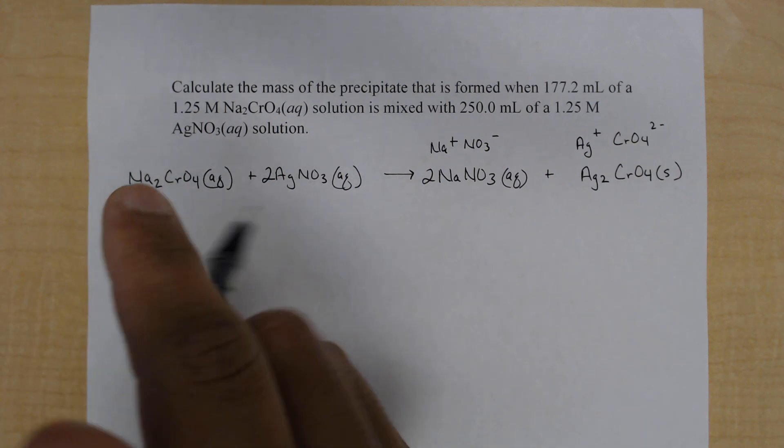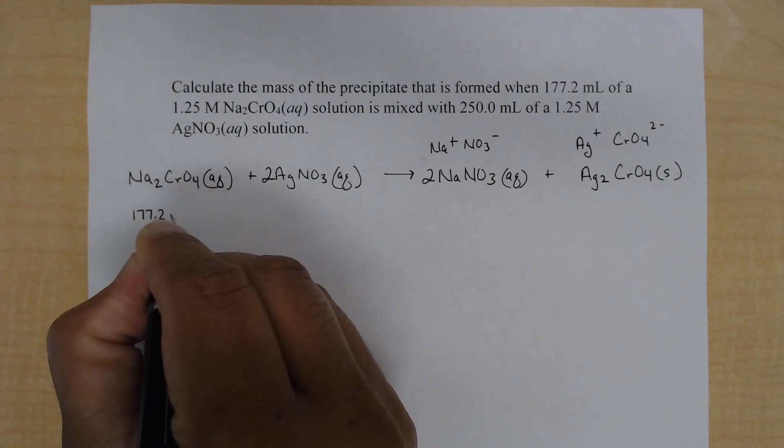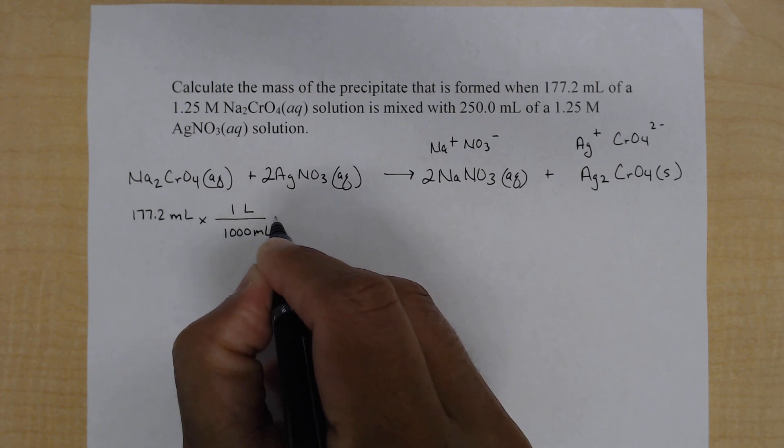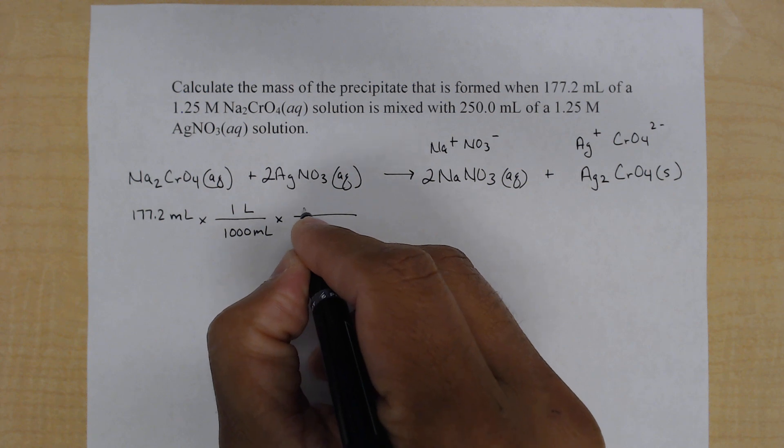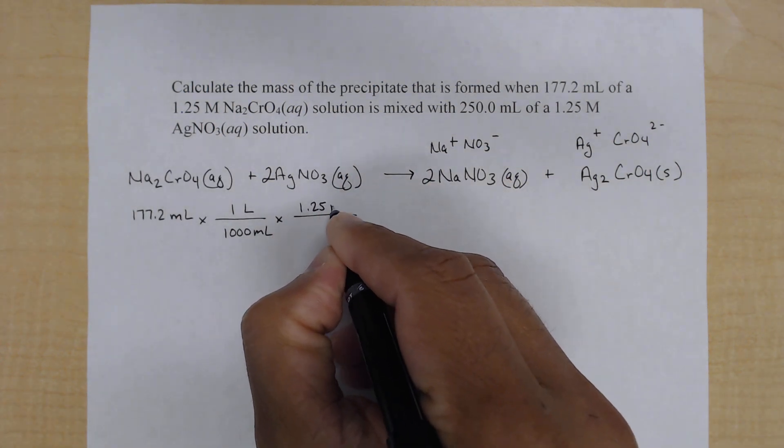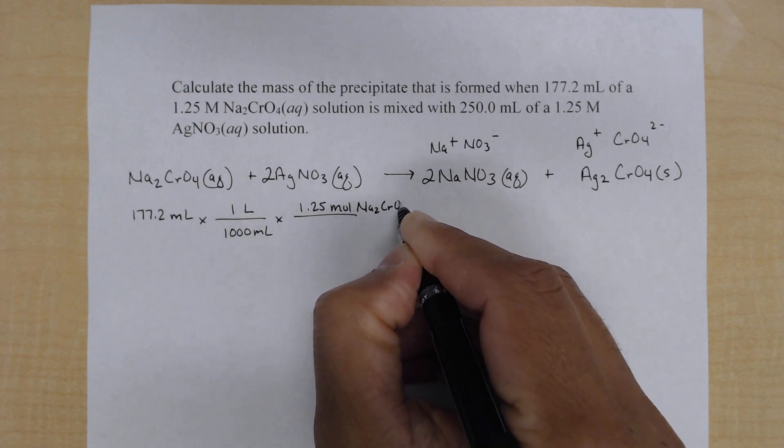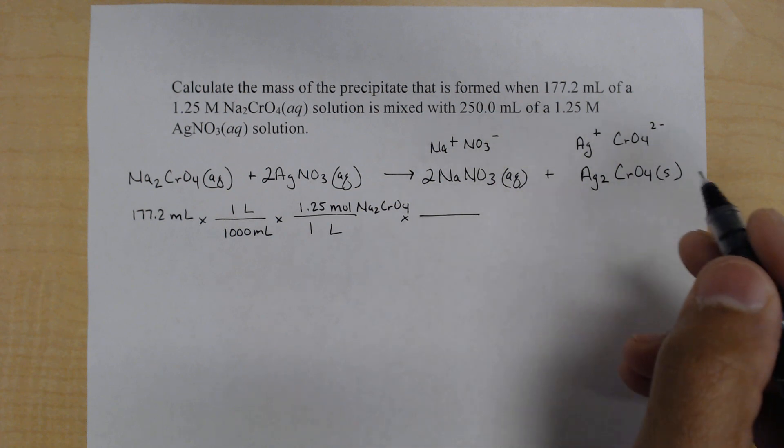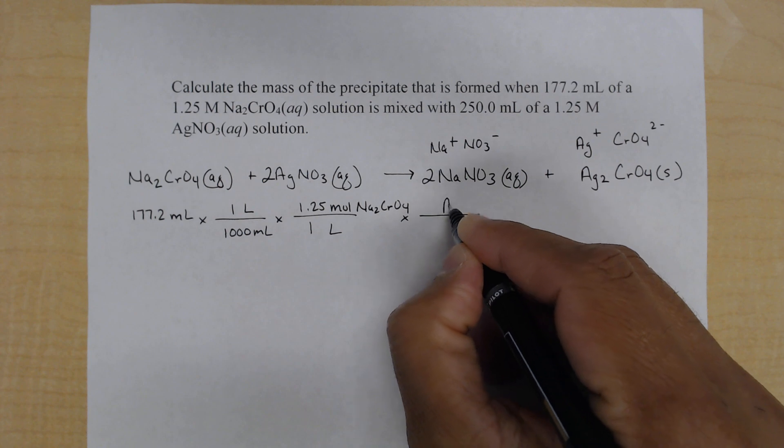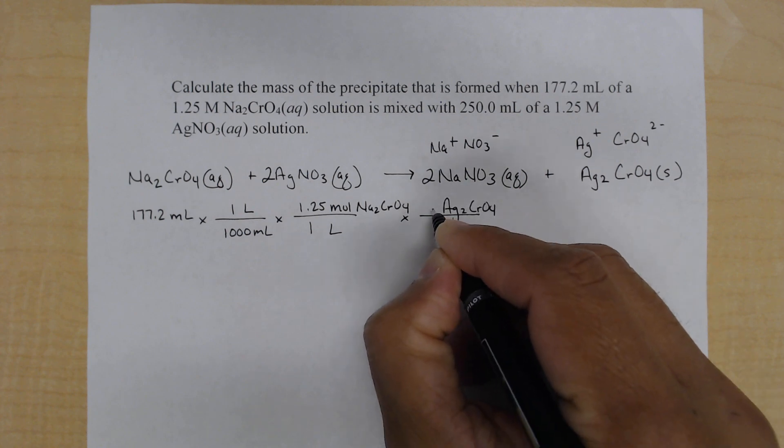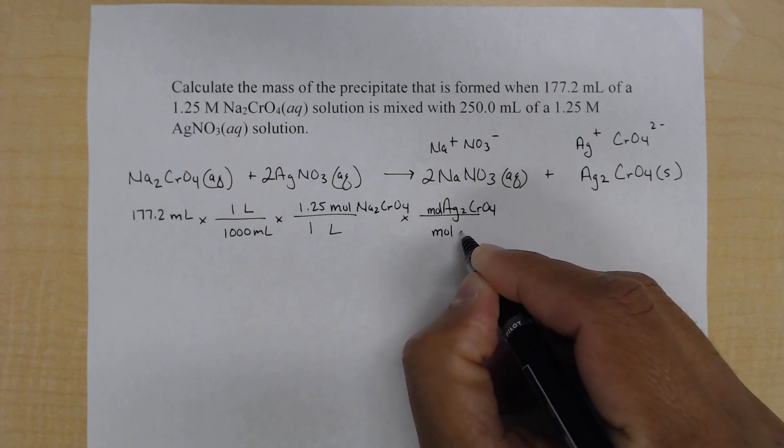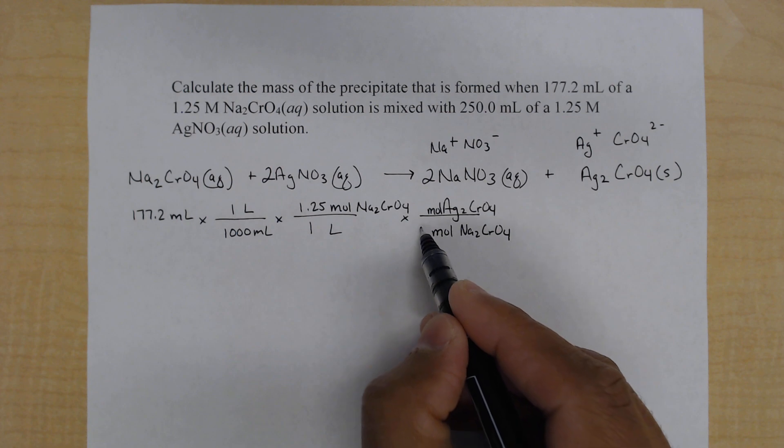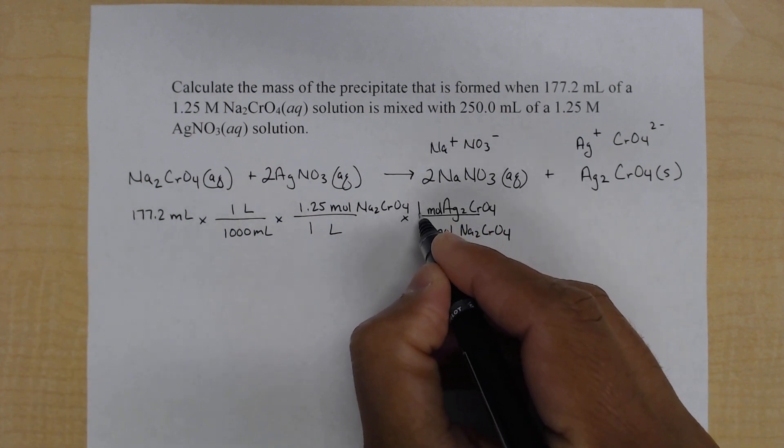So for our sodium chromate, we have 177.2 milliliters. Let's convert that to liters first. We'll convert to the moles using the molarity, 1.25 mole of sodium chromate for every one liter. Then we can do our stoichiometric step. We can convert to our product, the one we're interested in, silver chromate, and cancel mole of the sodium chromate. The mole to mole ratio here from the balanced equation, one mole of sodium chromate produces one mole of the silver chromate.